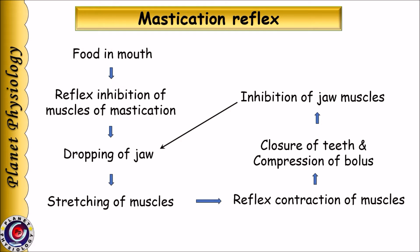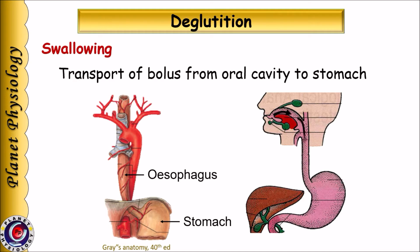Mastication is under voluntary control and hence the duration of it depends on our wish. Once the person decides to swallow the food, the next process begins, which is deglutation. Deglutation is the process of transport of bolus from oral cavity to the stomach.